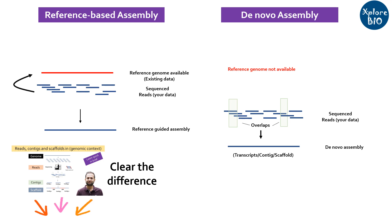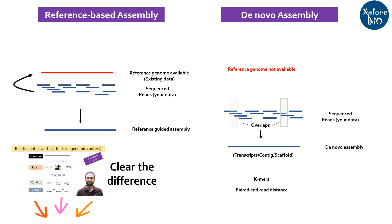Such sequencing is termed de novo sequencing. Sequence assemblers utilize different sets of algorithms to precisely assemble reads into transcripts, contigs, scaffolds, or chromosomes based on a minimum number of overlapping bases at the end of each read, also known as K-mers, as well as the distance between reads in paired-end reads, incorporating gaps if required.